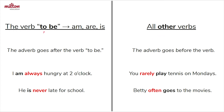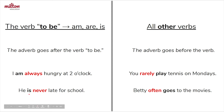Let's start with the verb to be. When we use the verb to be, the adverb goes after the verb to be. For example: I am always hungry at two o'clock — first the verb to be, and then the adverb always. Or, he is never late for school — first the verb to be, and then the adverb.